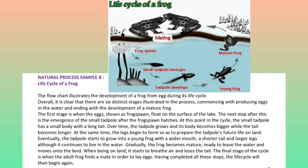At this point in the cycle, the small tadpole has a small body with a long tail. Over time, the tadpole grows and its body becomes bigger while the tail becomes longer. At the same time, the legs begin to form so as to prepare the tadpole's future life on land. Eventually, the tadpole starts to grow into a young frog with a wider mouth, a shorter tail and larger legs, although it continues to live in the water.